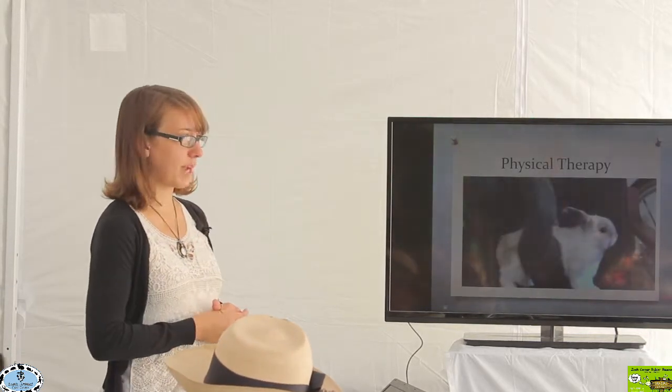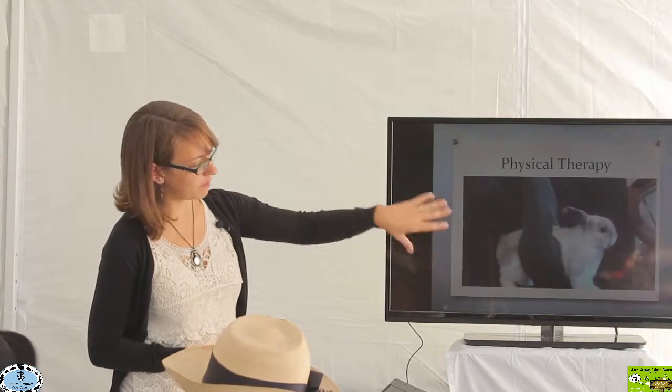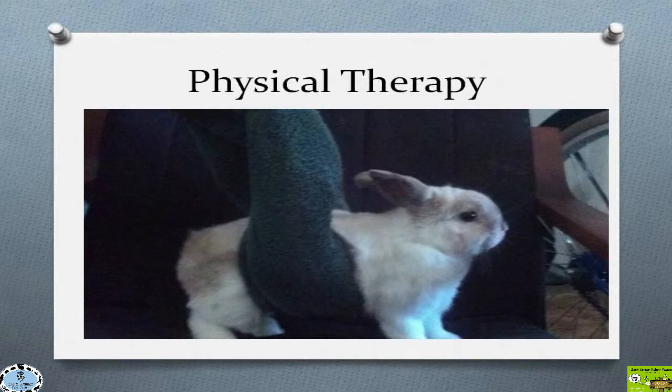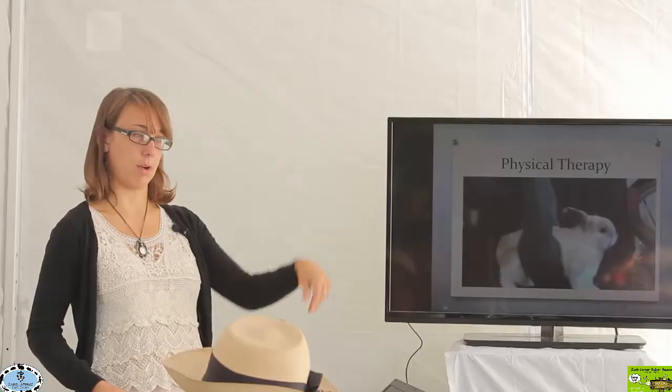So there's just a picture of a rabbit to show the placement of a towel if we're working on the hind end. We're really trying to support that hind end and then we can introduce gradual down and up sort of movements.